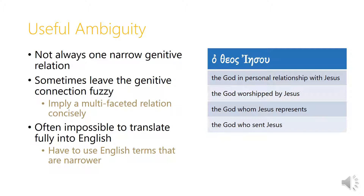Sometimes New Testament authors deliberately make use of the ambiguity in the genitive case. A phrase like the Jesus-God could mean the God in personal relationship with Jesus, the God worshiped by Jesus, the God represented by Jesus, or the God who sent Jesus. A New Testament writer using this phrase might want us to hear several of these different kinds of relationship at once, capitalizing on the genitive's ambiguity to express a cluster of relationships very tersely.